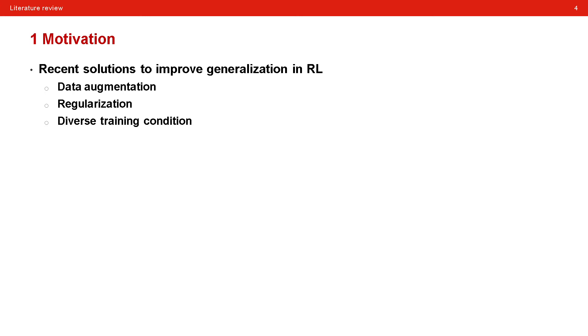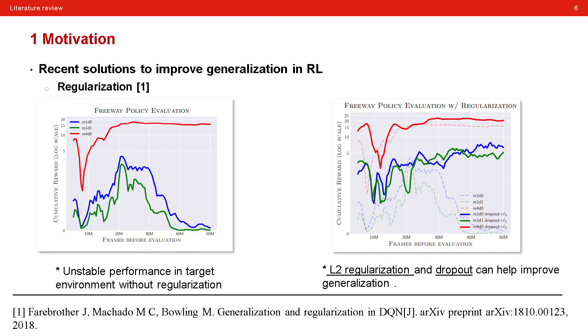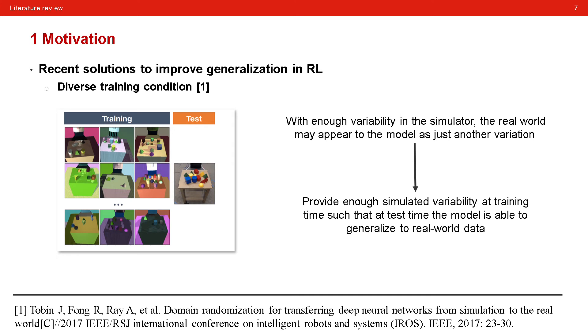And then there have been some solutions to address the generalization issue. For example, through data augmentation, the input is properly randomized for agents to learn invariant features. In this way, the feature space can be stable, so the policy in different environments can also be stabilized. Or by regularization, the technique to avoid overfitting in supervised learning is exploited in the reinforcement tasks here, which turns out to be effective. In addition, the overall training platform can play a role in improving the generalization just by producing diverse scenarios as much as possible.